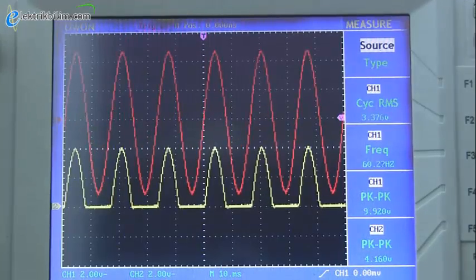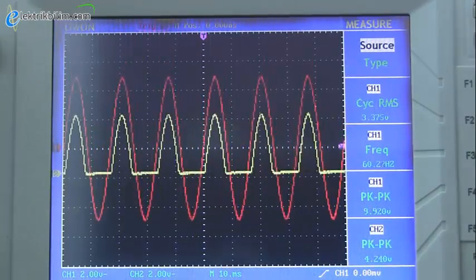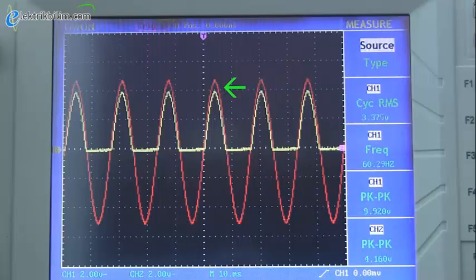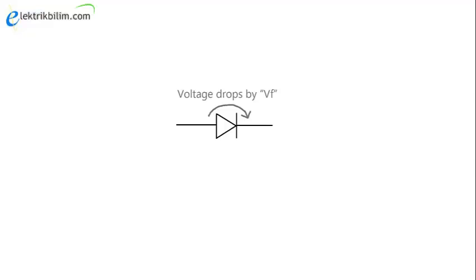Wait a minute. If you zoom in and put the waveforms on top of each other, there's a voltage missing. Well, that's because there's no such thing as a perfect diode. All diodes will have what is called a forward voltage drop, or VF.